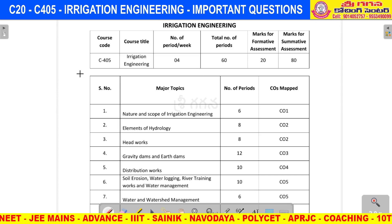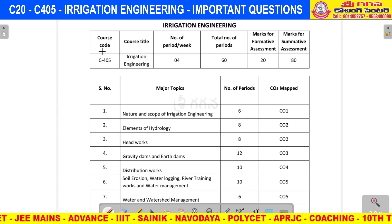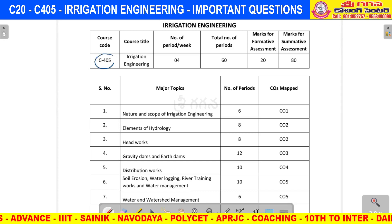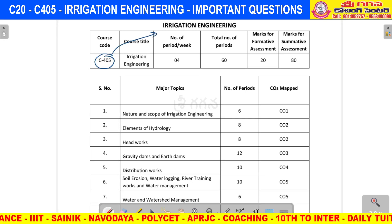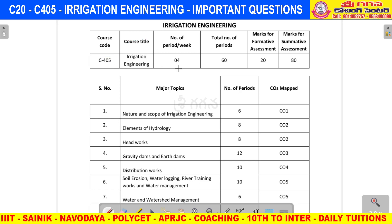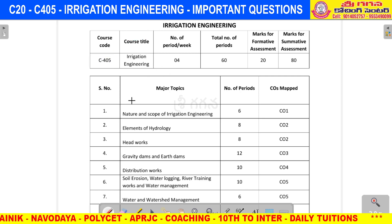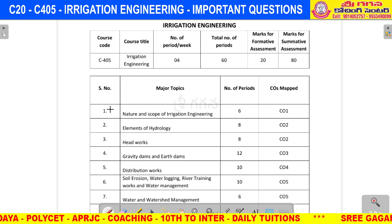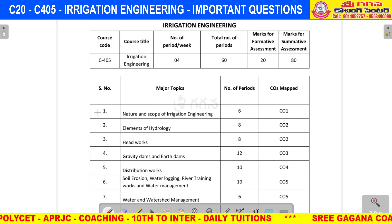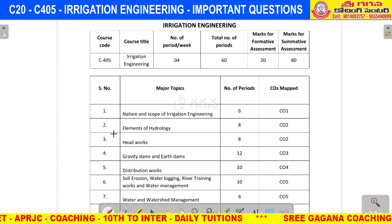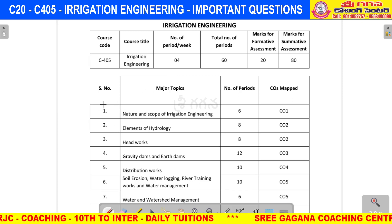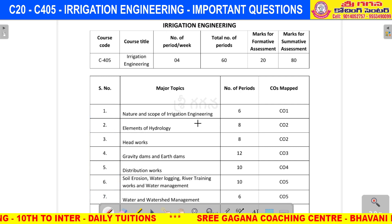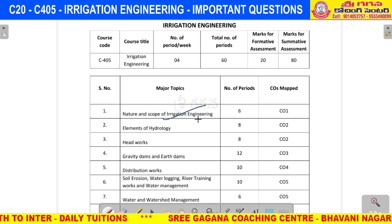Hello students. This video is called C405, the 4th semester diploma subject called Irrigation Engineering. In Irrigation Engineering, we will discuss the total units. We will discuss the important questions and important topics. We will discuss a total of 7 units. We choose: nature and scope of irrigation engineering,